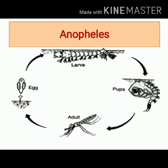The pupa is a comma-shaped structure. It has a cephalothorax, and two small respiratory tubes are present. The pupal stage of Anopheles mosquito is a resting stage.